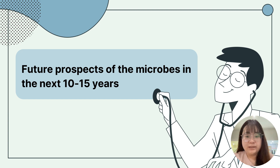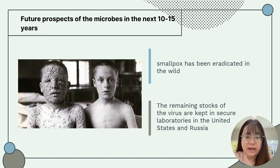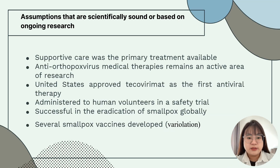Hi, I'm Kelvi. Now I'm going to share the future prospects of the microbes in the next 10 to 15 years. It is important to note that smallpox has been eradicated, and the only known remaining stocks of the virus are kept in secure laboratories such as the WHO Collaborating Centre on Smallpox and Other Poxvirus Infections at the CDC in the United States, and the Russian State Research Centre of Virology and Biotechnology. Before smallpox was eradicated, the main form of treatment was supportive care, which aimed to relieve symptoms and provide comfort to patients.